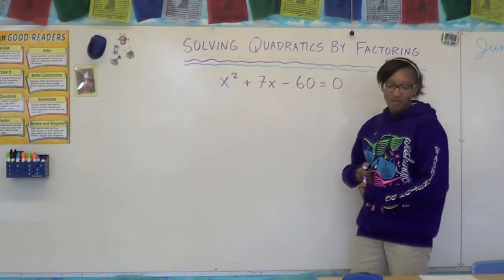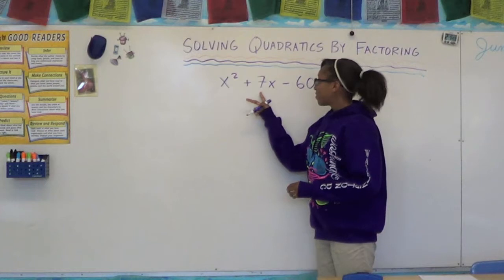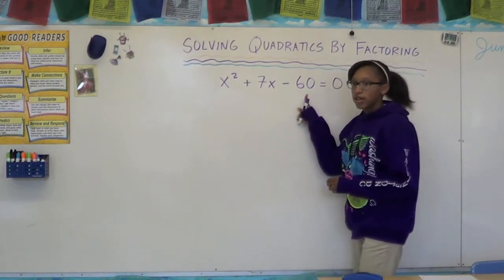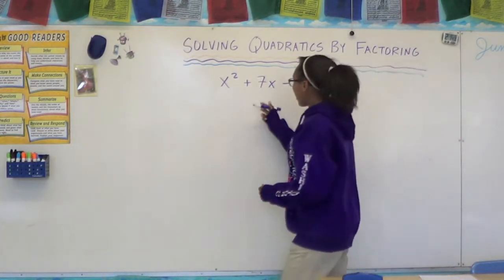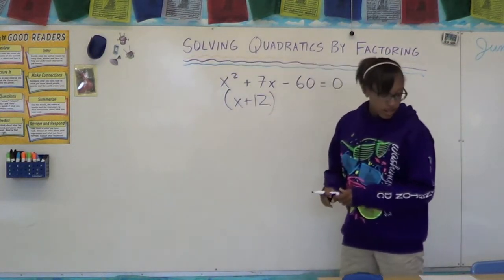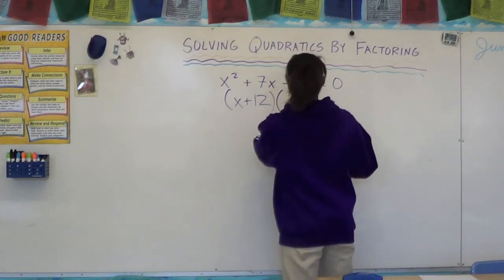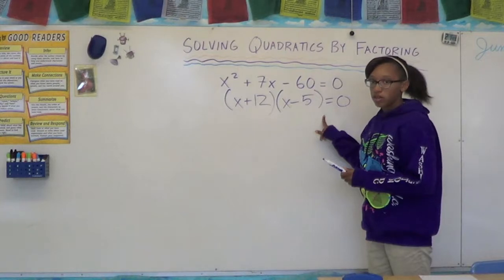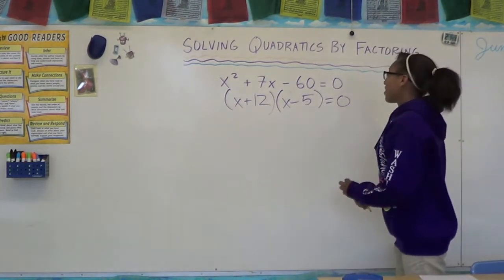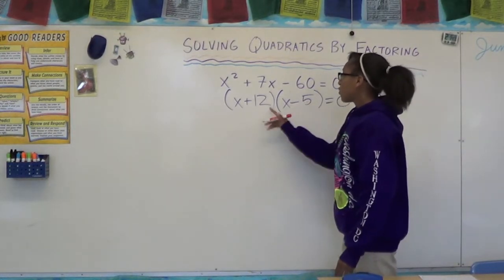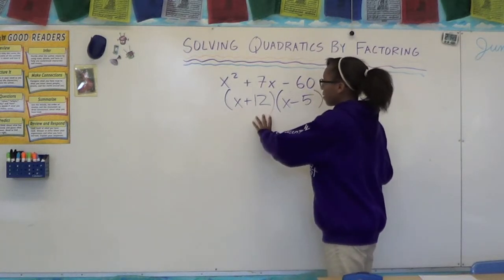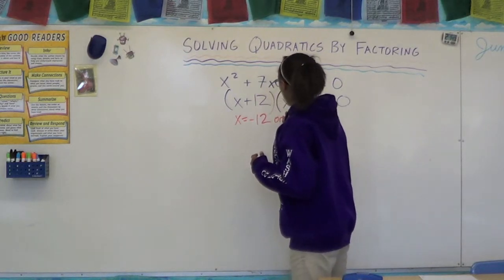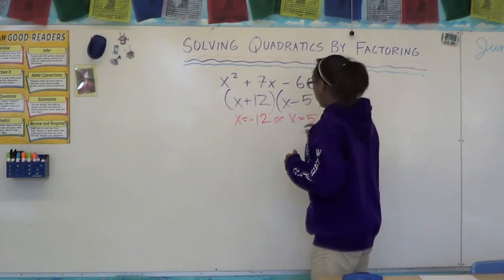My name's Andi and I'm going to teach you how to solve quadratics by factoring. The problem is x² + 7x − 60 = 0. We have to figure out what two numbers add to 7 and what two numbers multiply to negative 60. So it factors to (x + 12)(x − 5) = 0. I have to put equals zero because it's an equation. So in order for this product to equal zero, one of the factors has to equal zero. Therefore x is going to have to equal negative 12 or x could equal positive 5. And that's how you solve a quadratic.